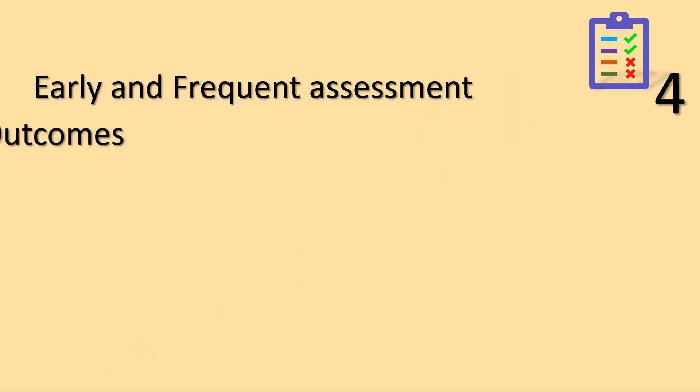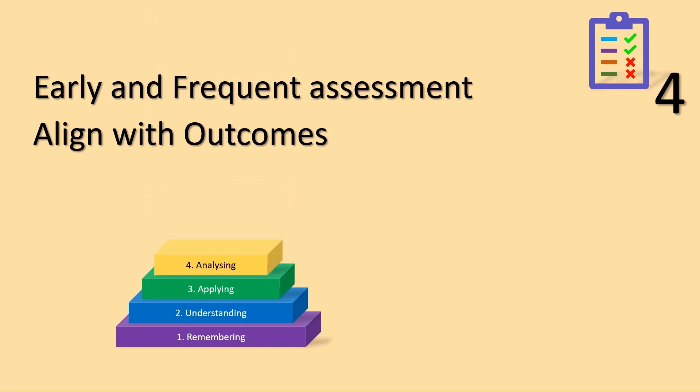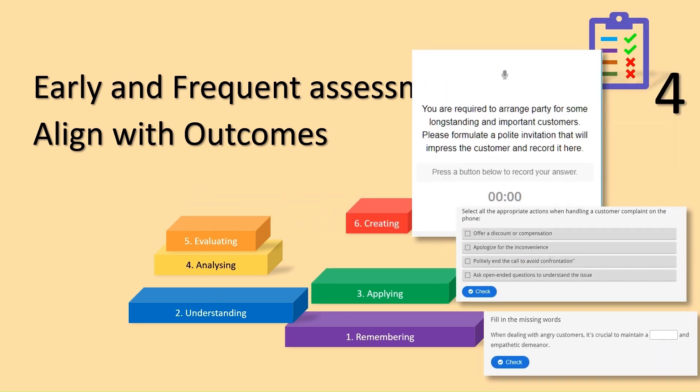Second, align assessments with outcomes. Remember the outcomes we defined in step two? Your assessments should directly measure the attainment of those objectives. Go beyond simple remember questions. If your outcomes aim for higher levels, such as apply, construct assessments that challenge learners accordingly. In our frontline heroes example training, outcomes span Bloom's levels 1, 3, and 6, each supported by tailored assessment questions.